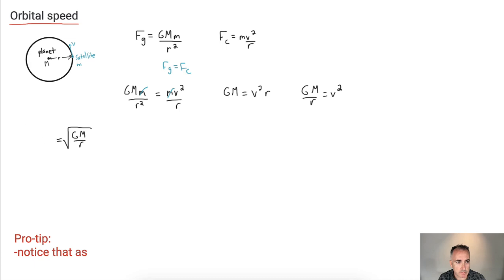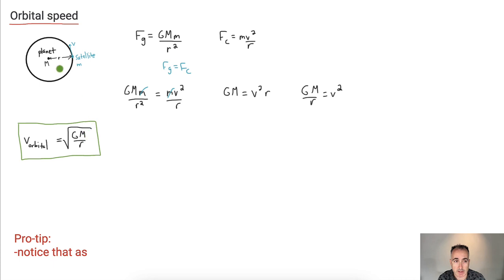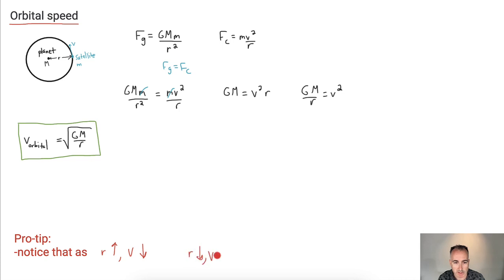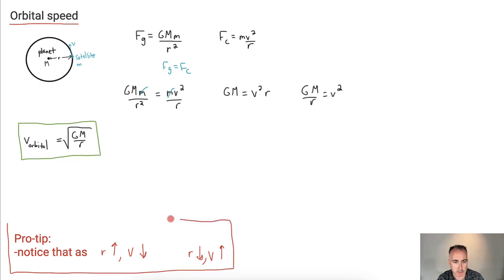The orbital speed v_orbital equals the square root of G M over R. So the orbital speed is related to the mass of the object you're orbiting — not the mass of the satellite — and it's related to the orbital radius. Notice what happens: as R goes up, V goes down, the orbital speed decreases. Conversely, as R goes down, V goes up. That means the farther away you are, the slower you travel. That's how orbital speed works.